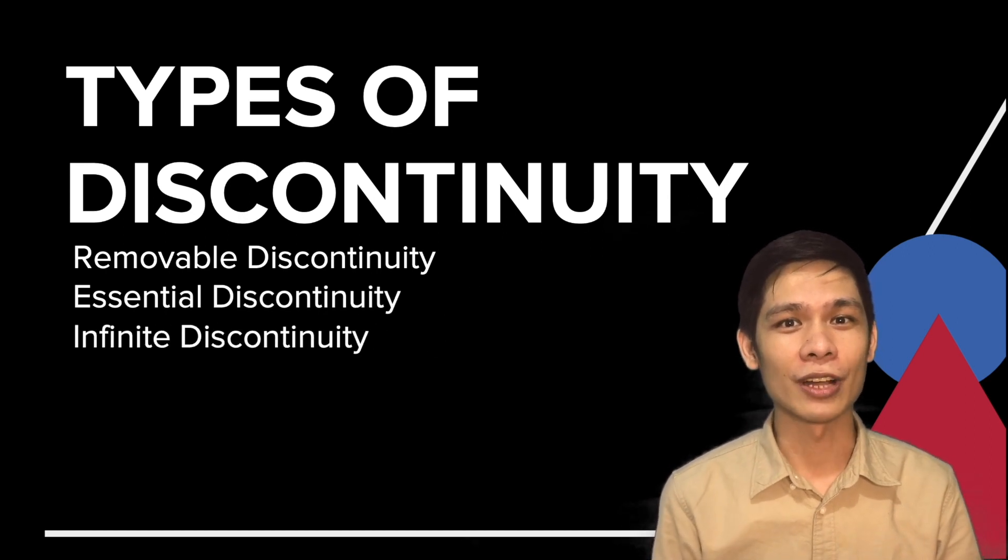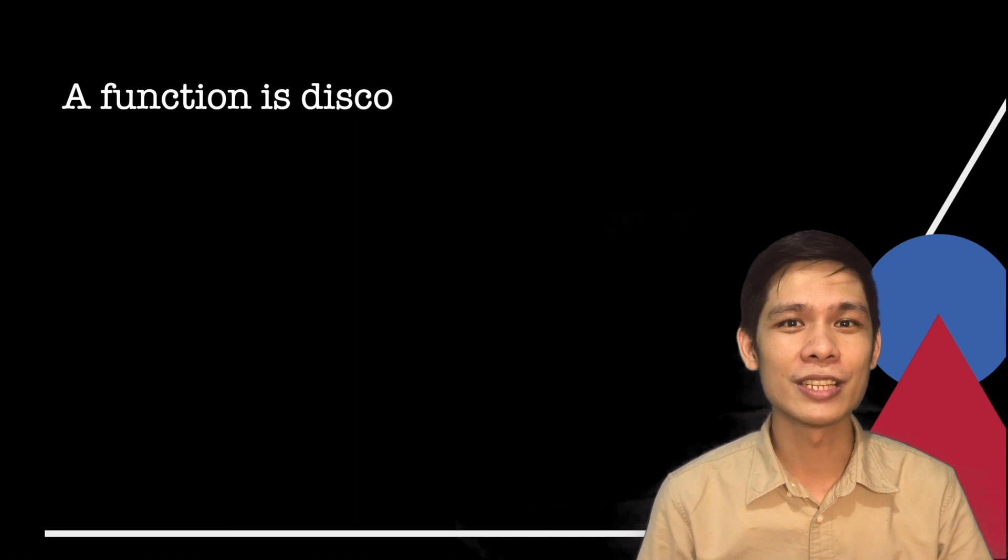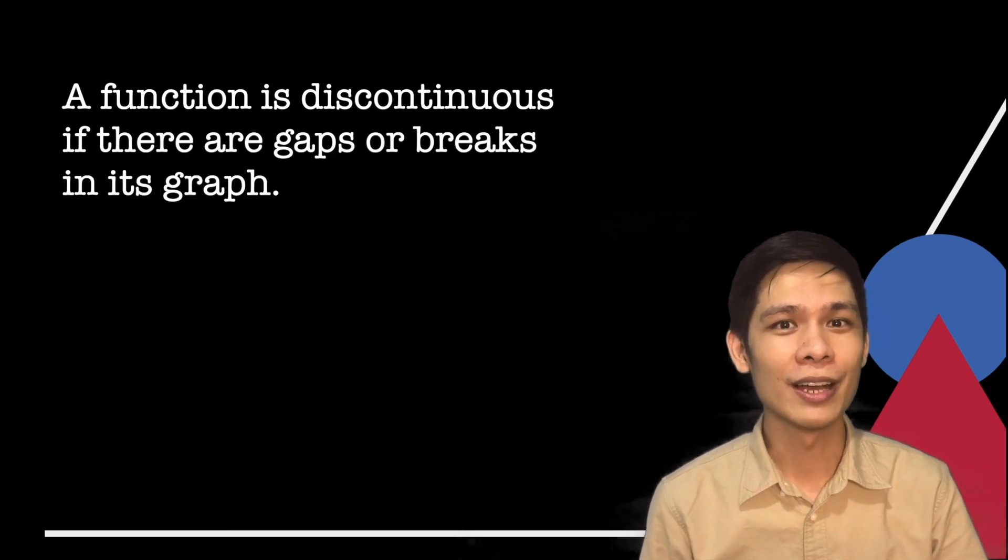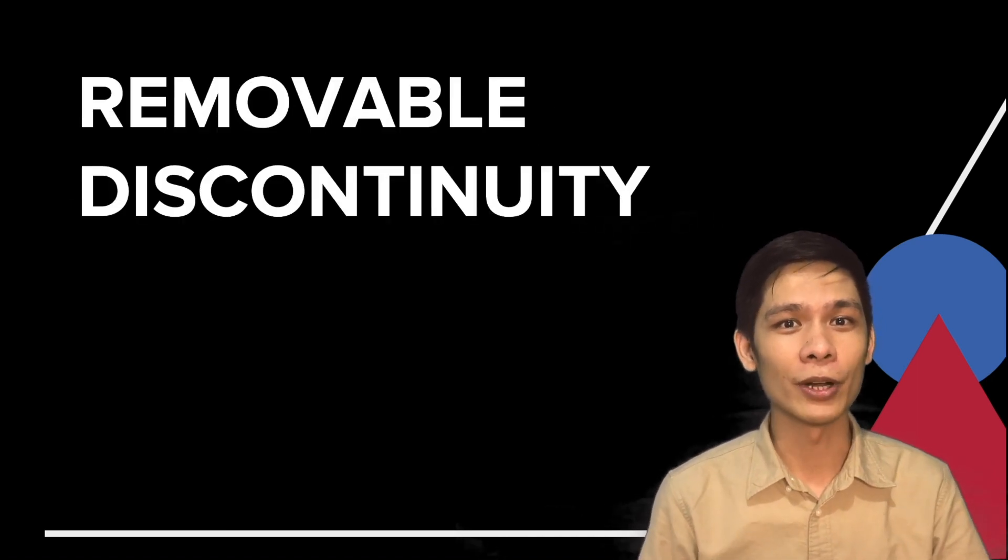But how do we know if a function is not continuous? A function is discontinuous if there are gaps or breaks in its graph. Let's start our discussion with removable discontinuity.